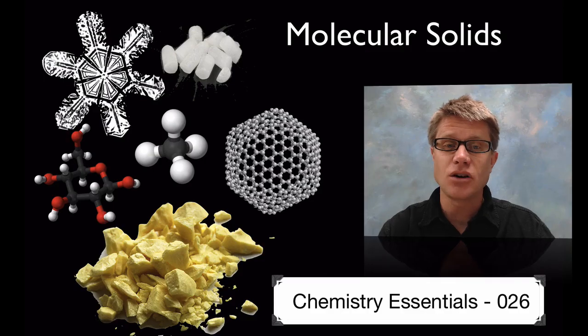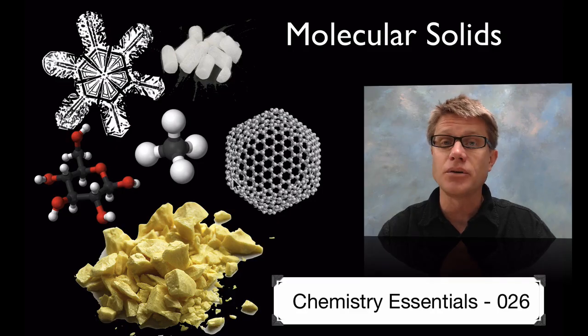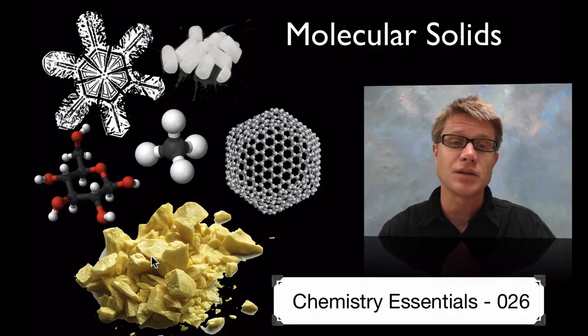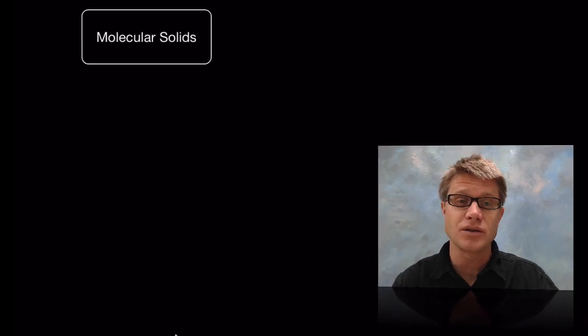This could be ice in a snowflake, it could be dry ice, methane as a solid, sugar, fullerenes which are big complex molecules made of carbon, or sulfur which is made of eight atoms connected together and then held together with other forces.